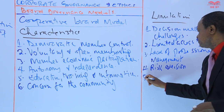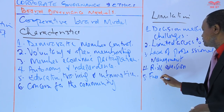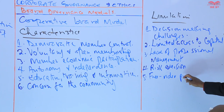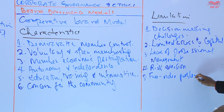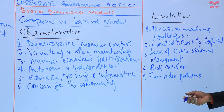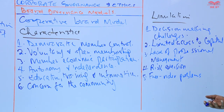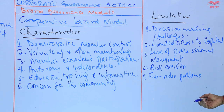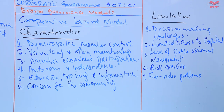The fifth limitation is free rider problems. Some members may take advantage of the cooperative's benefits without contributing their fair share, leading to resentment among other members. These are some of the limitations of the cooperative board model.